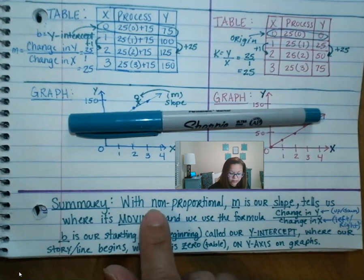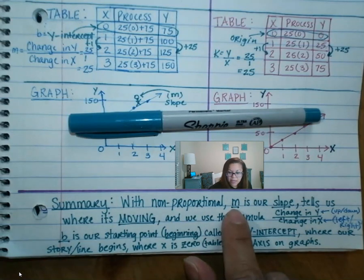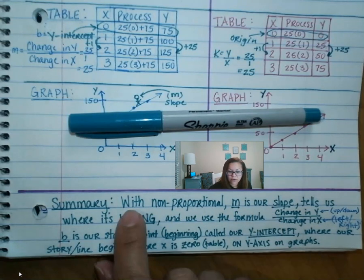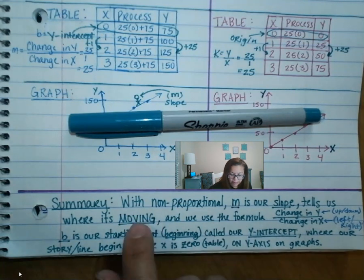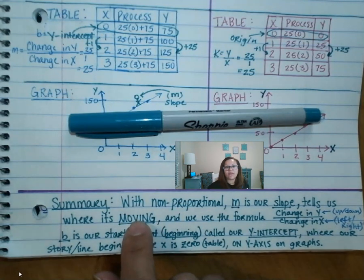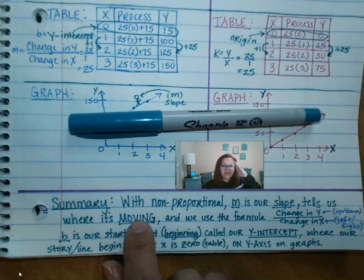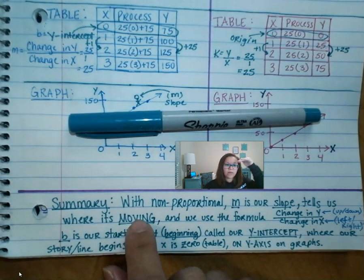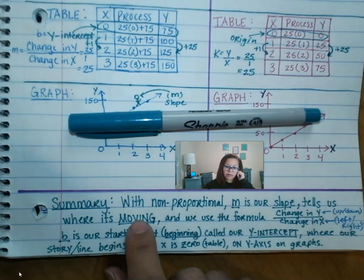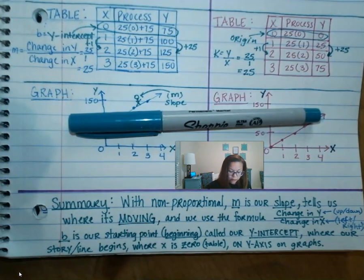So with the summary, it says with non-proportional, M is our slope. It tells us where it's moving. And I also say like our mountain slope, right? The mountain slope is either going to go up, we climb the mountain slope, or it's going to go down. We go down the mountain slope. So however you want to remember it.